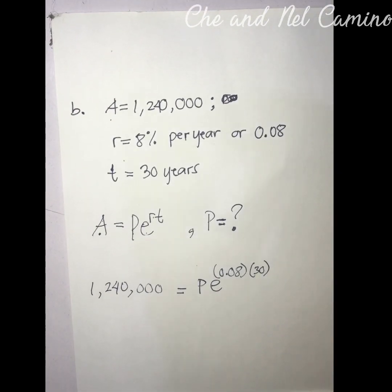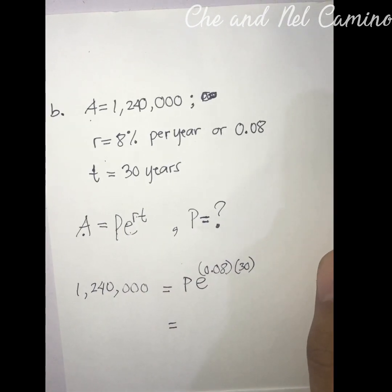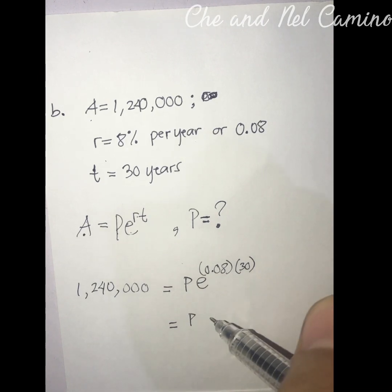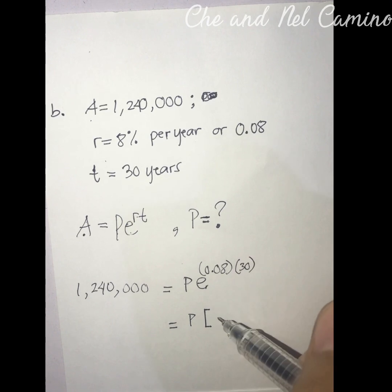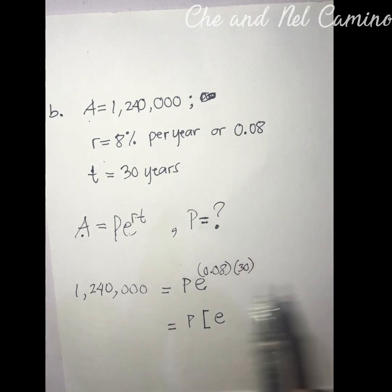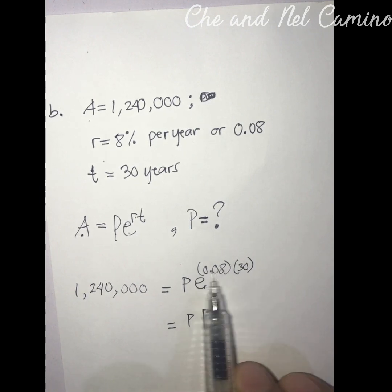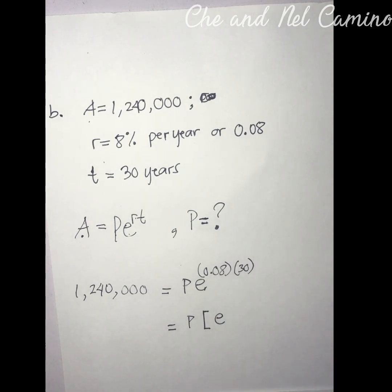What's next? P times the value of e. We are going to multiply first the exponent of e: 0.08 times 30 is equal to 2.4.